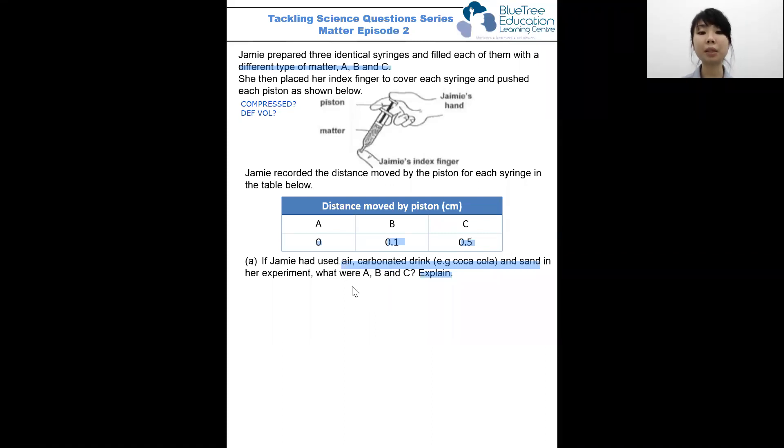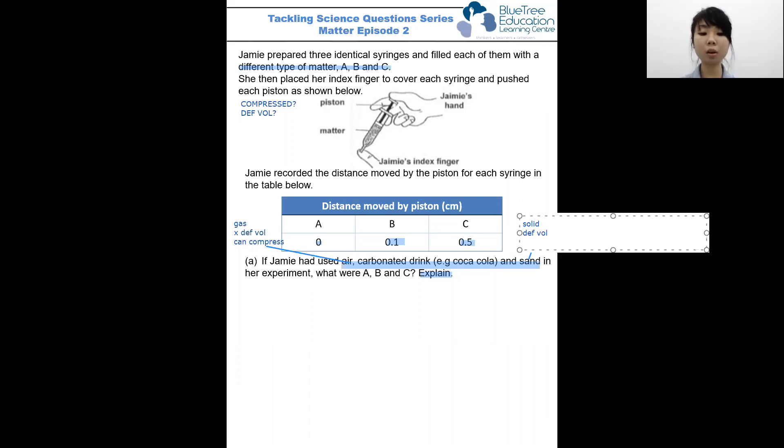So let's once again look at the materials that she used: air, carbonated drink and sand. We can quickly write that for air, it is a gas, and we know that gas does not have a definite volume, and so it will be able to be compressed. For sand, which is a solid, it has a definite volume, and it will not be compressible.